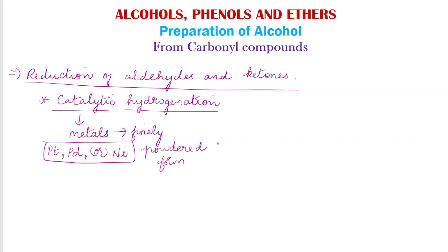What happens here is: we have C double bond O, and when we pass hydrogen in the presence of a catalyst, one hydrogen atom is added to the carbon and the other to the oxygen, thereby giving the product CHOH. So the corresponding alcohol is produced.